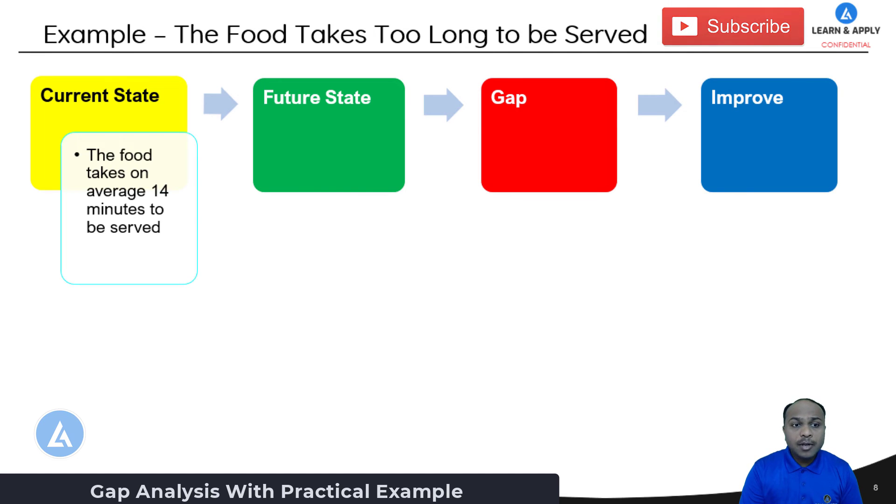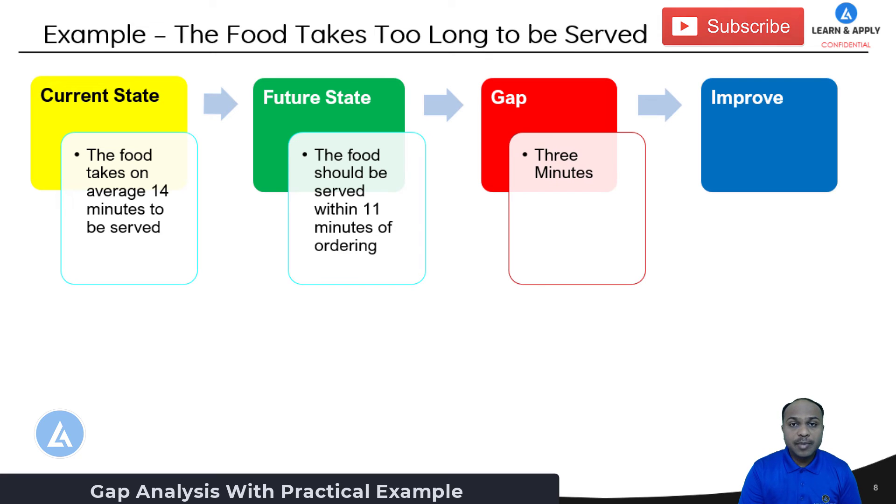Now in our example what will be the current state? The food takes on average of 14 minutes to be served. Whereas the future state will be the food should be served within 11 minutes of ordering. So what is the gap between these two states? Three minutes. To improve this gap of three minutes we need to follow the below actions that are decided to improve the serving time.